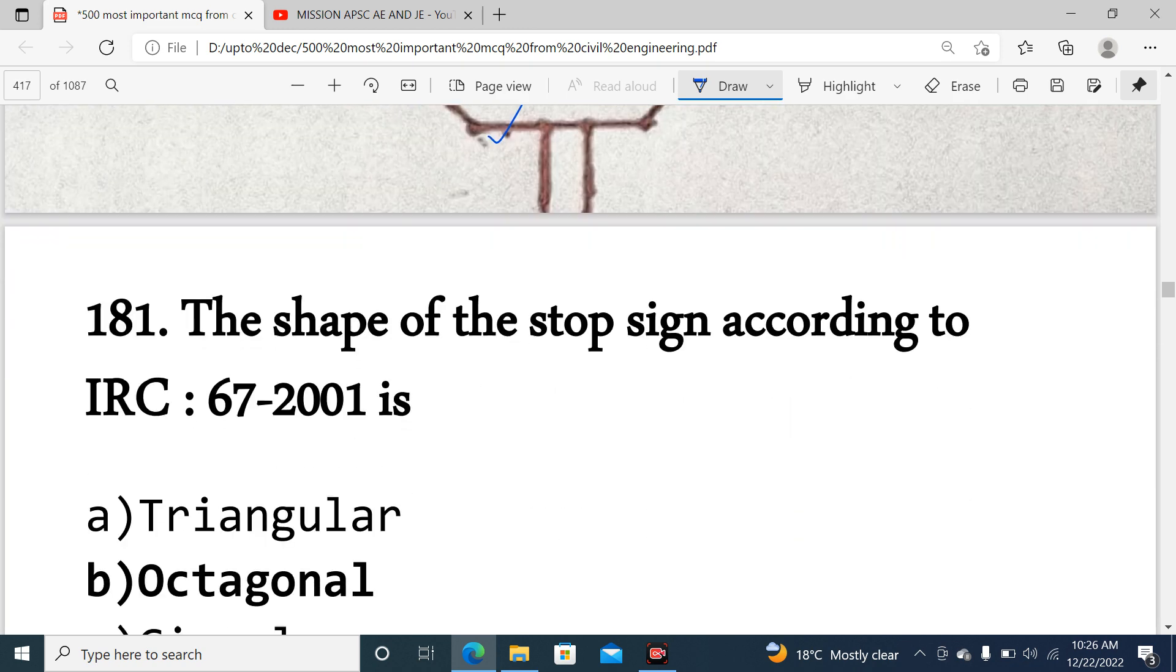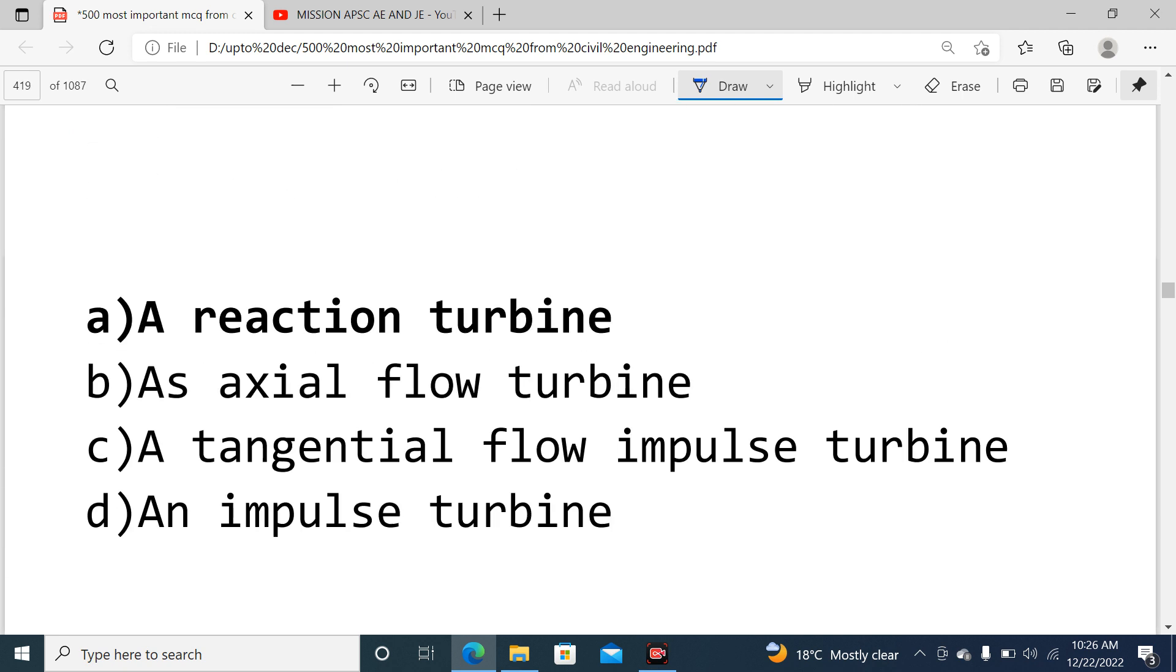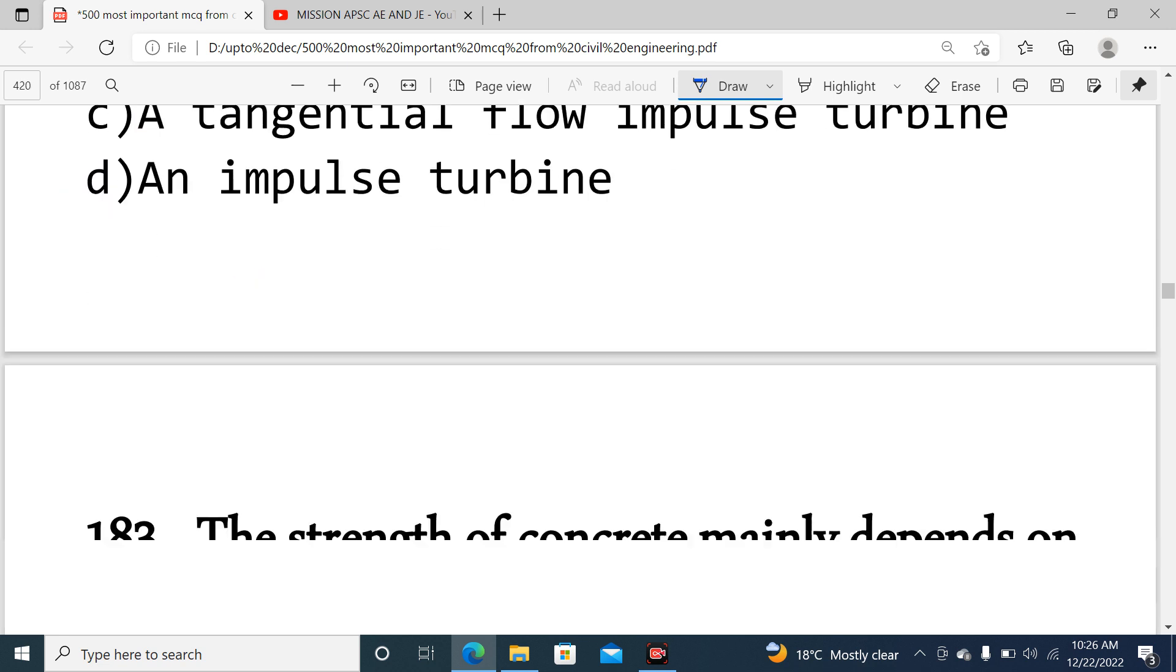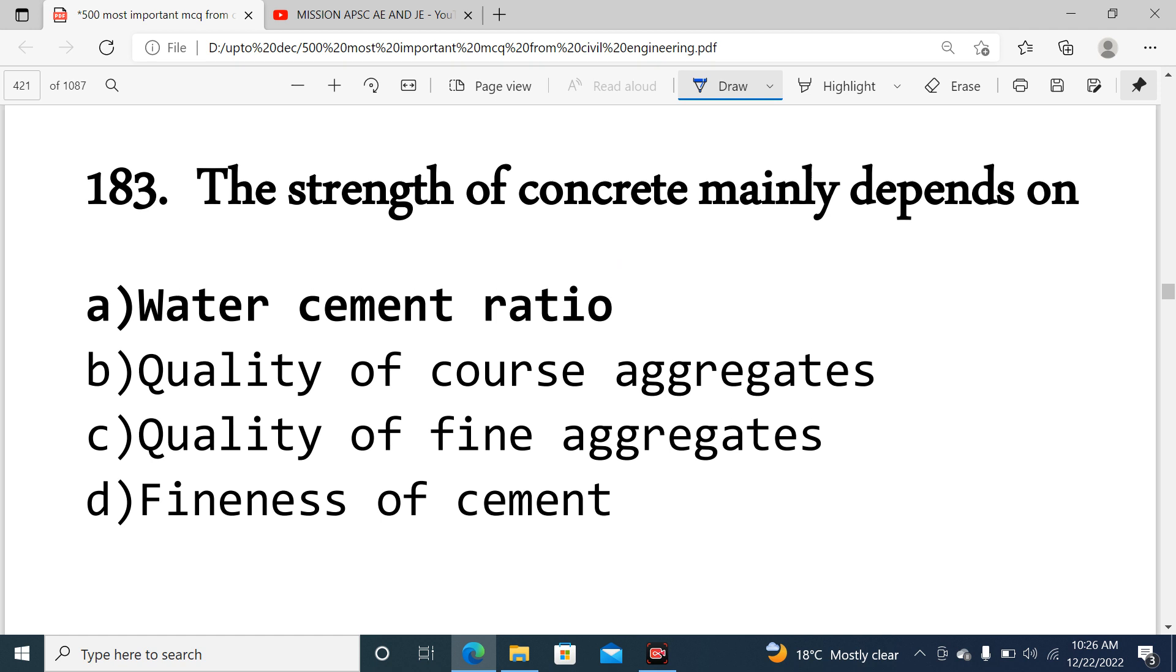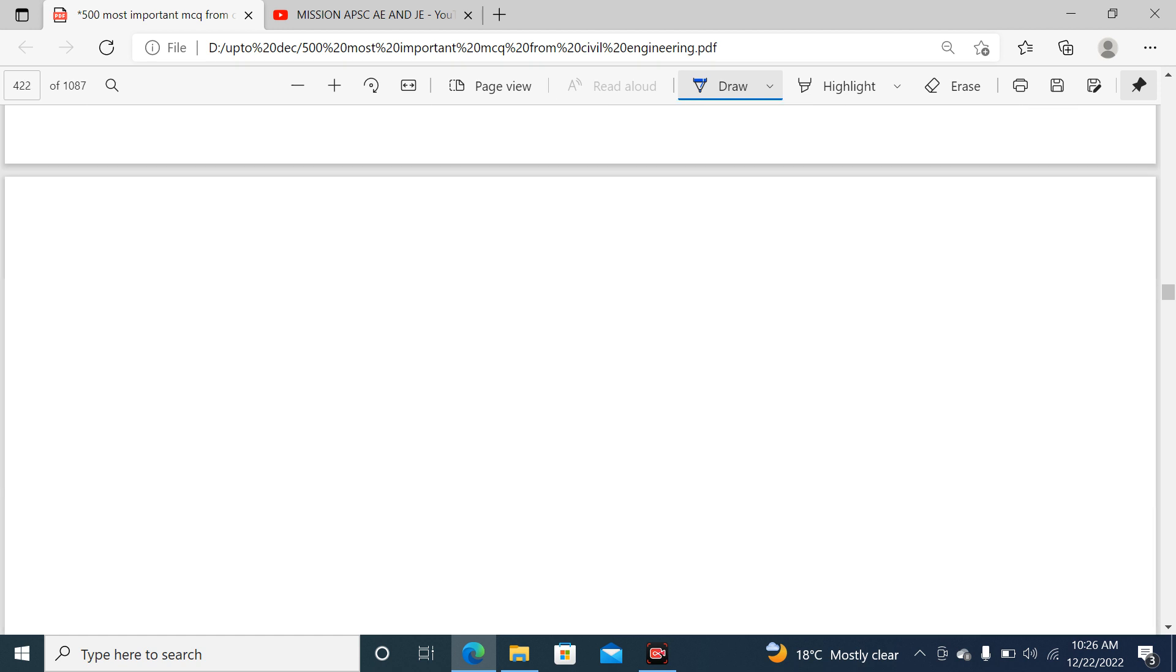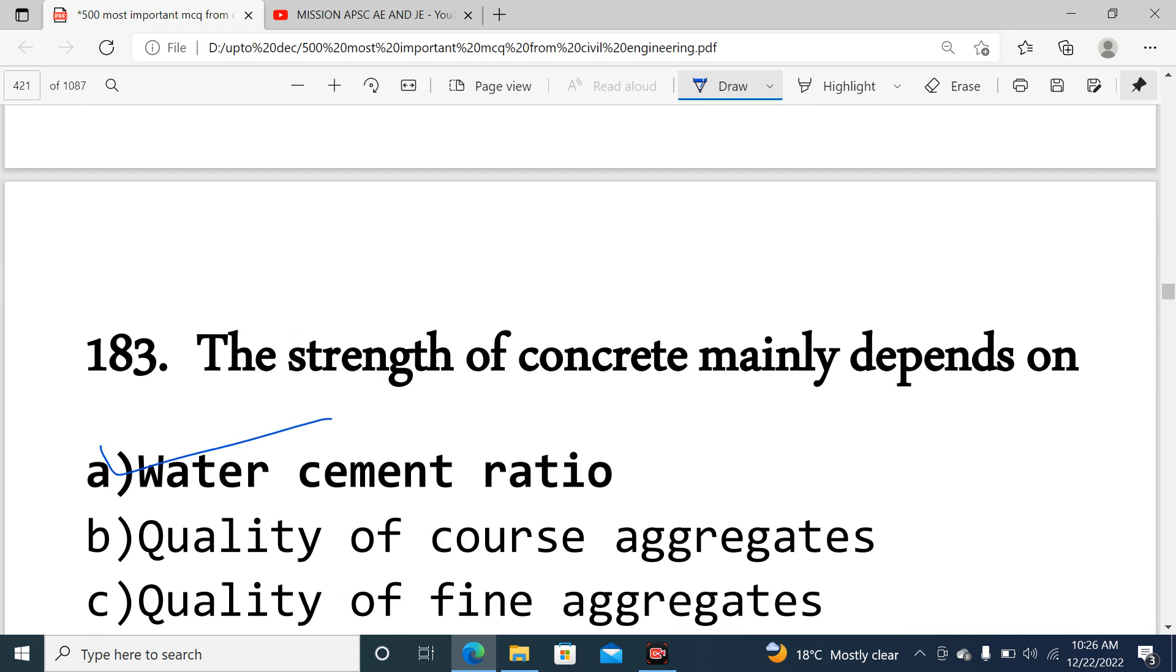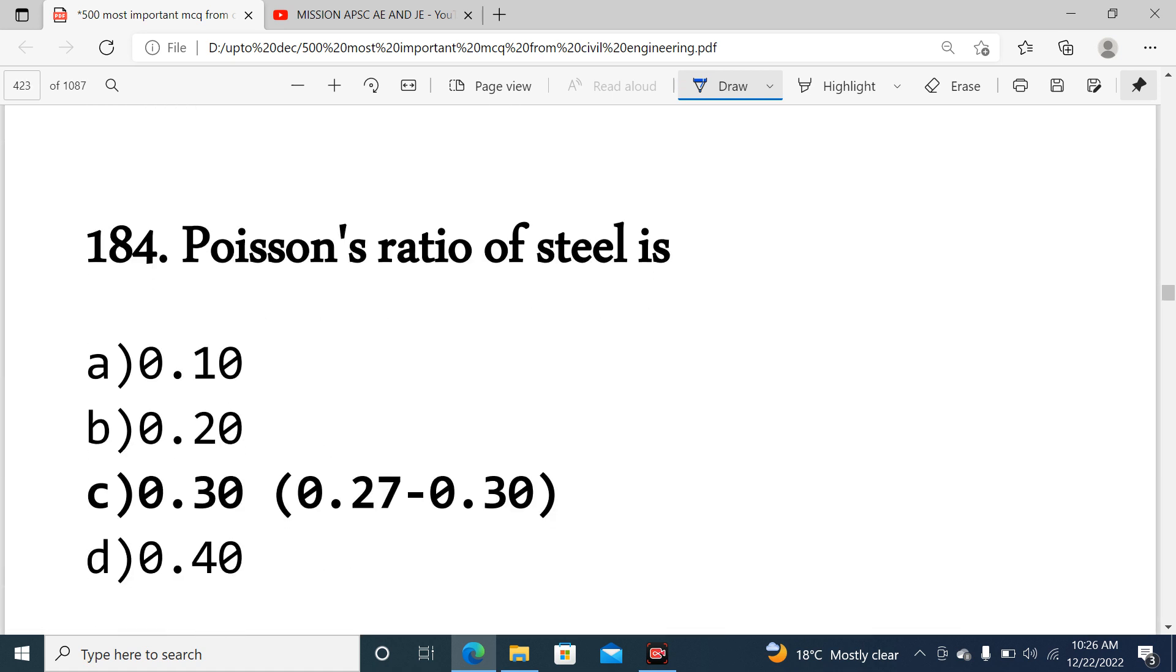Question 182: Francis turbine is a reaction turbine. Question 183: The strength of concrete mainly depends on the water cement ratio. Question 184: Poisson's ratio of steel is 0.27 to 0.30, so option C is correct.